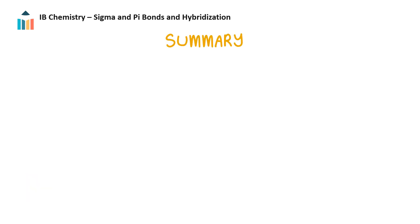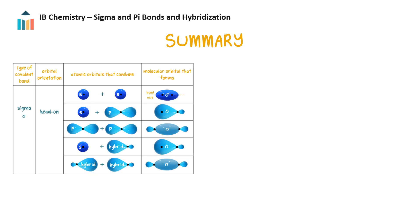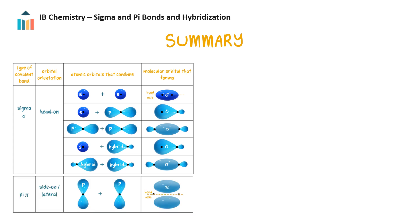Now let's recap what we've learnt. We learnt that sigma bonds form from head-on overlap of the following orbitals: s with s, p with p, s with p, or a hybrid orbital with an s orbital, or a hybrid orbital with a hybrid orbital. And that pi bonds form from the lateral or sideways overlap of p orbitals.